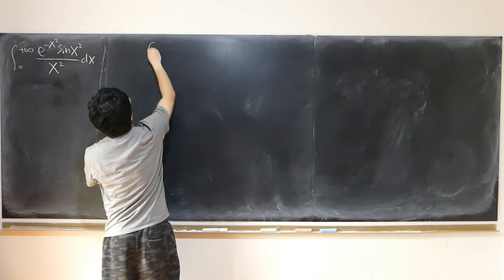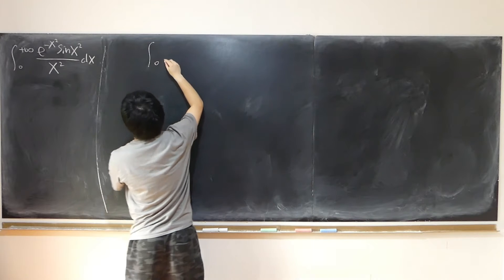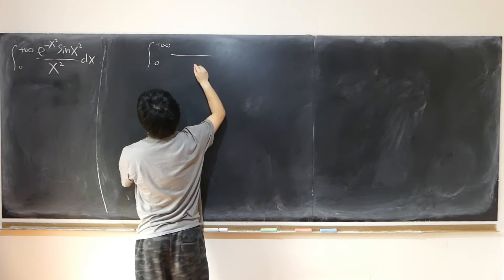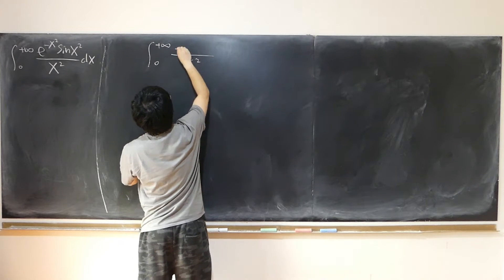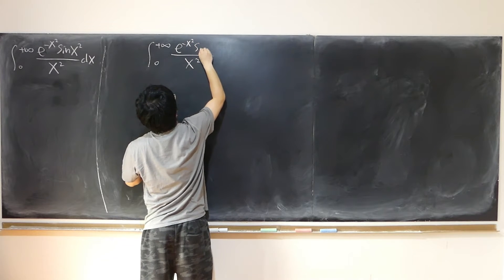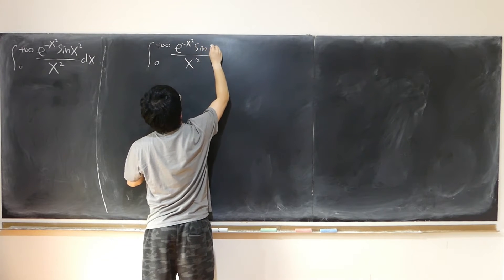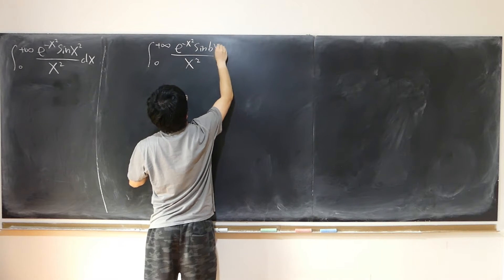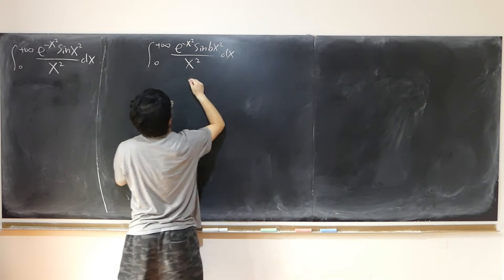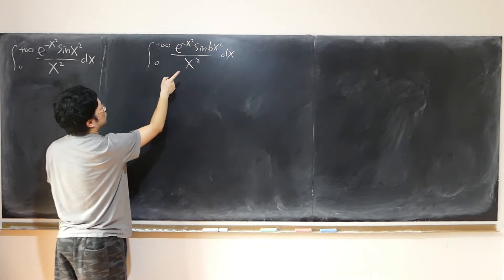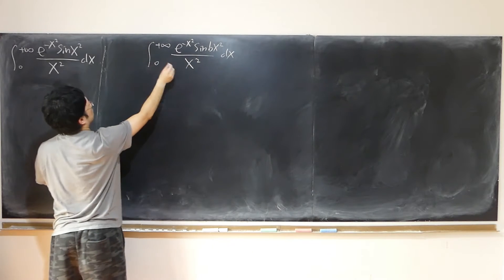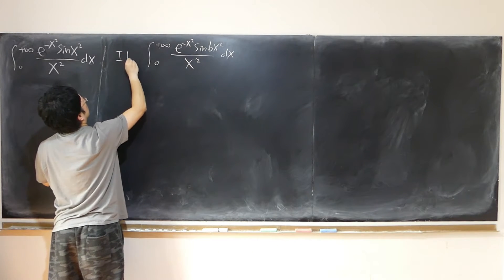So I introduce a parameter b. Consider I(b) as the integral from 0 to positive infinity of e to the negative x squared times sine of b times x squared, divided by x squared, dx. So this integral depends on the value of b, so it's a function in terms of b — I of b.